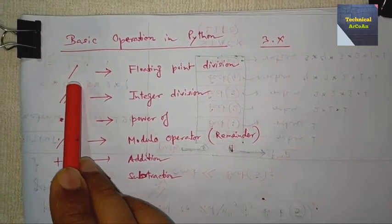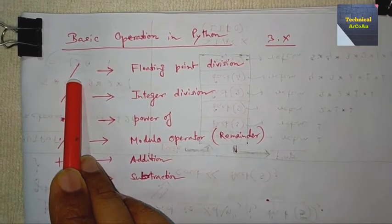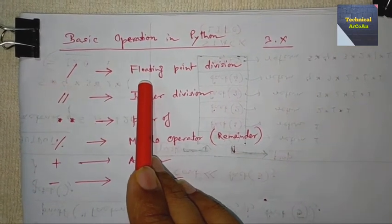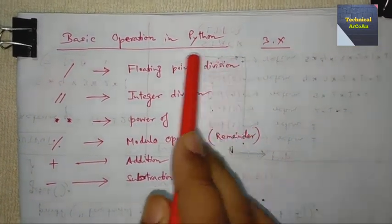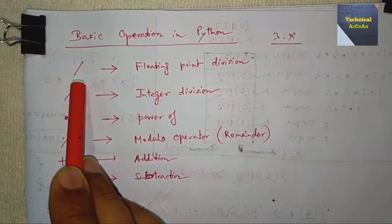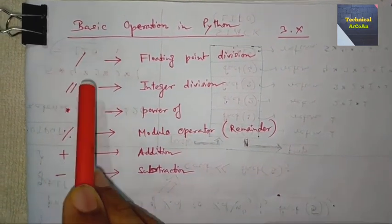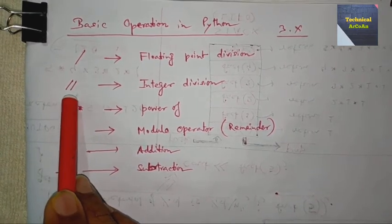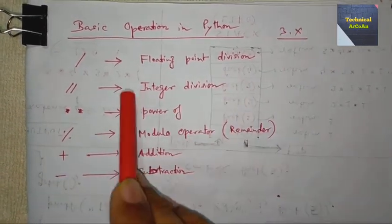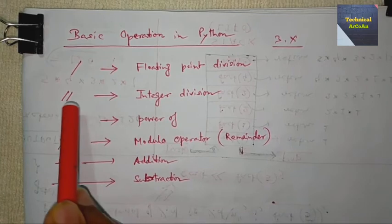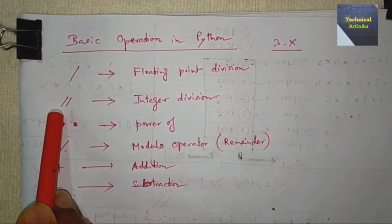The operations: first, single forward slash is known as floating point division. When we do floating point division, we use this operator. Next, double forward slash is integer division. For integer division we use this operator.